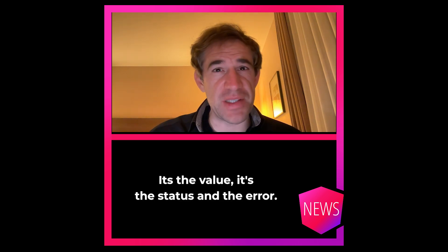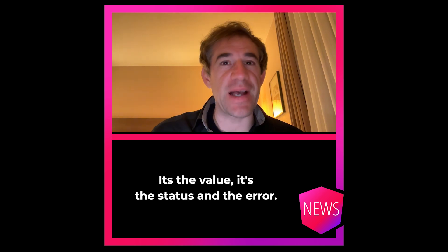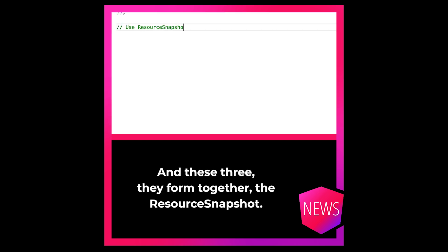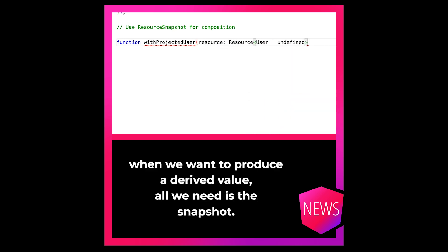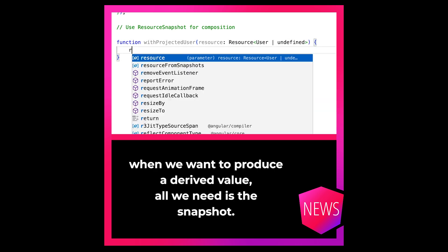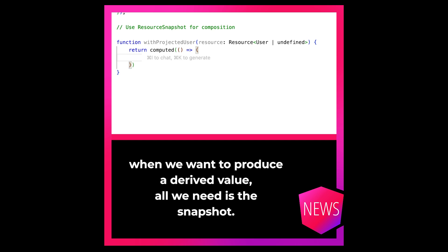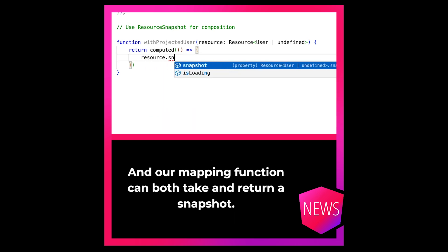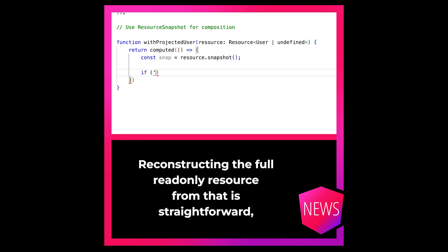If we look more closely at a read-only resource, we can say its core is three different properties: the value, the status, and the error. And these three form together the Resource Snapshot. Therefore, when we want to produce a derived value, all we need is the snapshot.